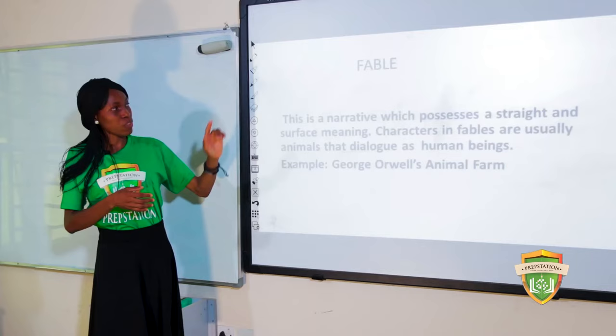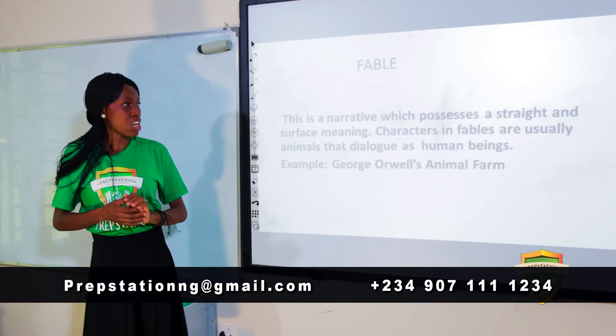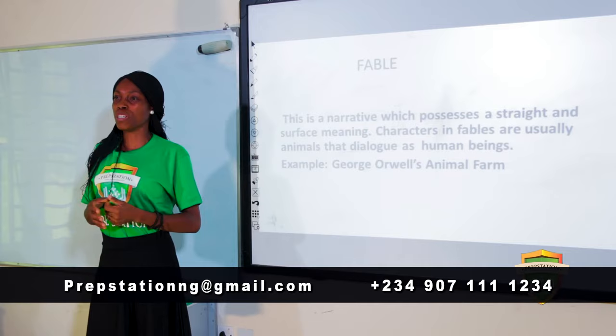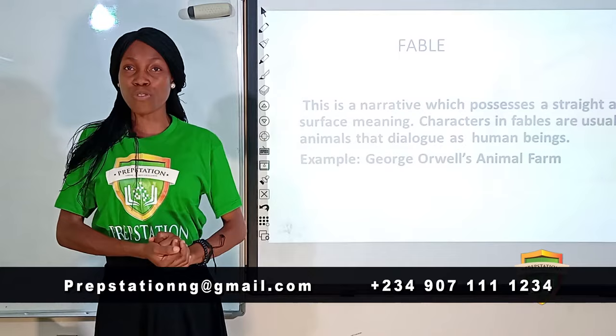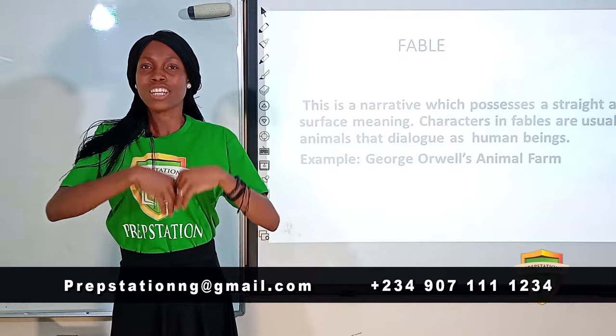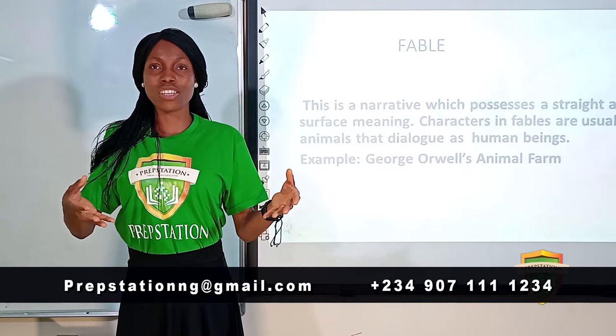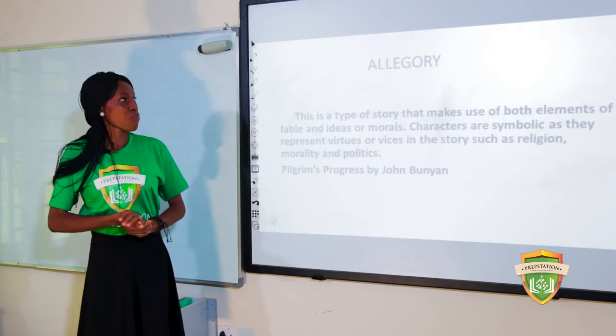A fable is a narrative with a straight surface meaning where characters are usually animals that dialogue as human beings. We're familiar with stories like the greedy tortoise, the lion as king of the jungle, and the lion and the hare — these are examples of fables where animals talk and perform certain actions.